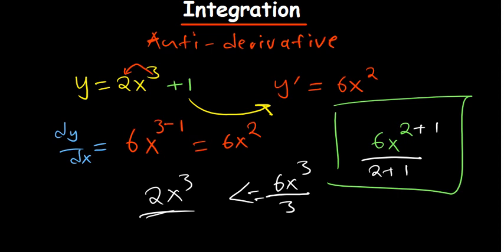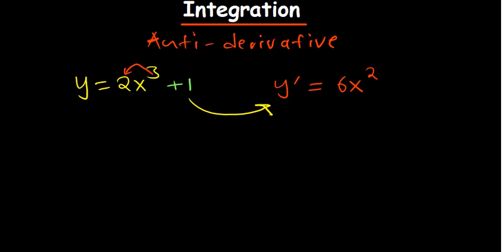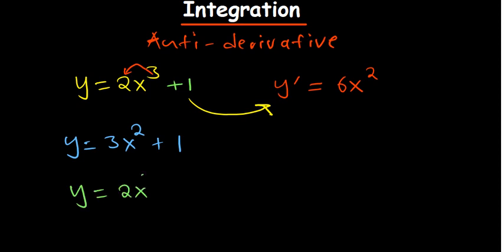It's not too complicated, but it gets a bit tricky. When we reversed, we got back 2x³, but we can't recover the original constant. There are many functions that can give the same derivative — for example, y = 2x³ + 1 or 2x³ with a different constant would both give the same derivative.